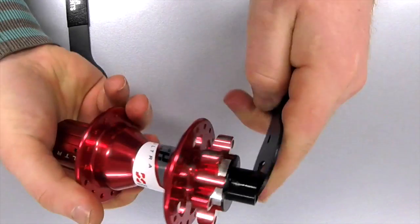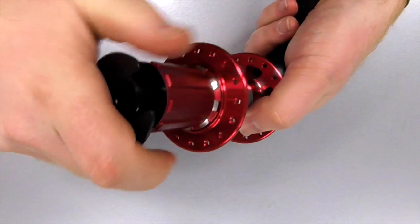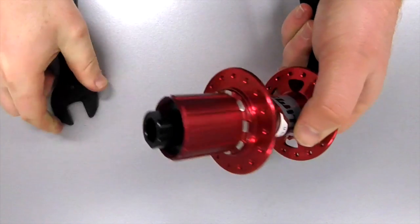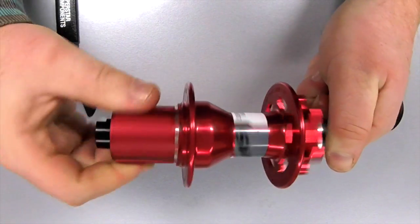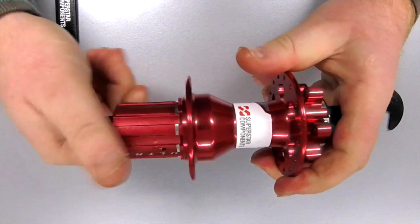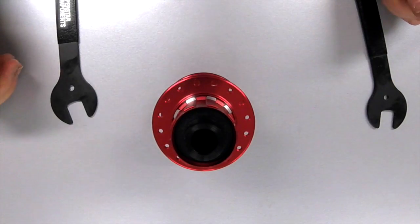And then take your cone spanners again on the slots on the ends and just nip up. There's no need to crank it up really tight. Make sure it's free on both the main body and also on the freehub. Once you've done that you have a fully rebuilt and brand new Superstar Switch Ultra rear hub.